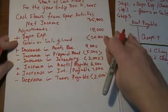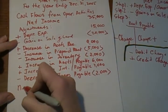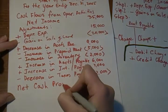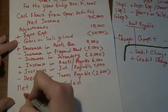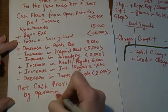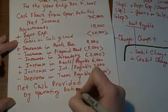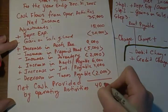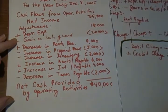We're almost done. If you add them all up, you will get net cash — it's going to be a positive number for us, therefore it's 'provided by operating activities.' If you end up with a negative number, you would say 'used by operating activities.' In our case, it's forty thousand dollars. We're done.